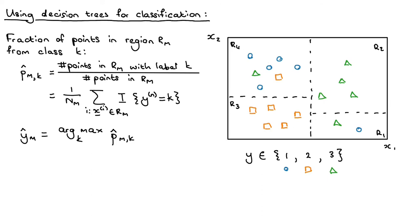For the green one, we've got 1 out of 7. And for the orange square, we've got 1 out of 7 as well. So the class with the highest proportion in this region is clearly the blue circle class.